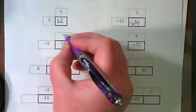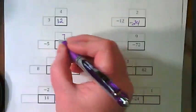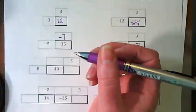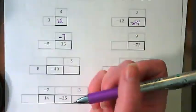So this can't be positive 7. It has to be negative 7 to get our negative times our negative gives us a positive.